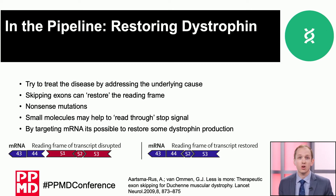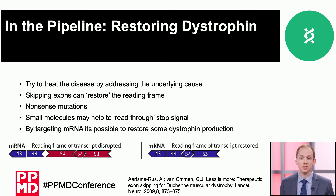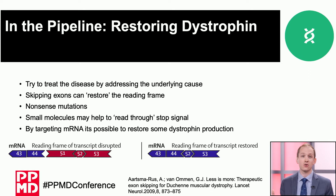We also have individuals with nonsense mutations who have premature stop signals. Typically that stop signal comes at the end of the instructions to make a protein, but in those individuals it comes earlier, again disrupting the reading frame and preventing functional dystrophin from being produced. These are therapies that target the messenger RNA to help restore some of that dystrophin protein.